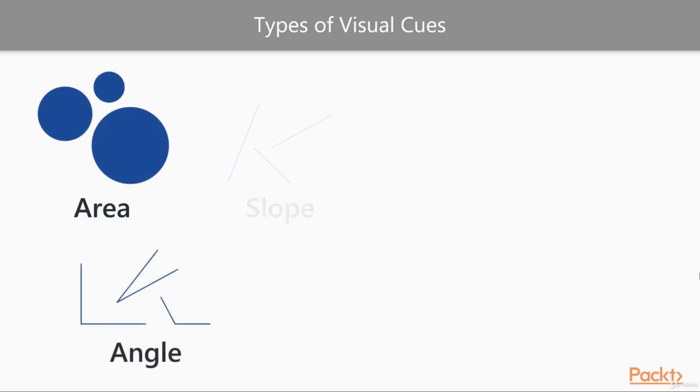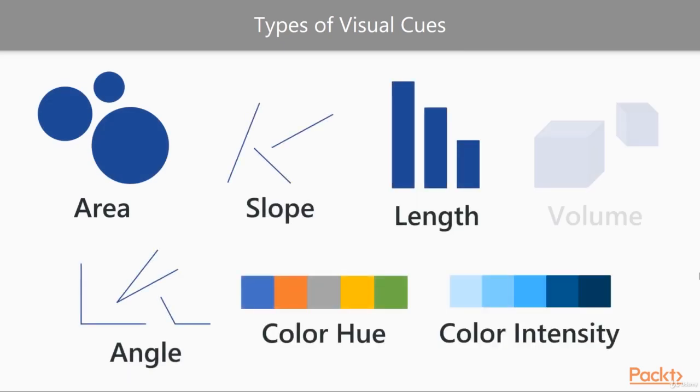The first thing I want to discuss is the concept of visual cues. Visualization cues are the ways which we can take data and present it visually — it's how we translate information from thought into sight. Here is a display of the primary ways which our brains perceive differences in size, quantity, quality, or value. Most reporting tools these days contain a variety of visualizations that utilize a combination of these cues to display information.